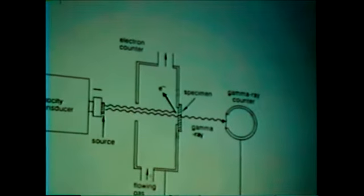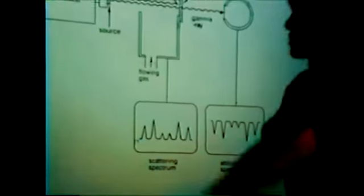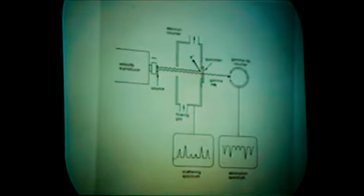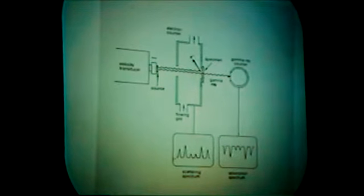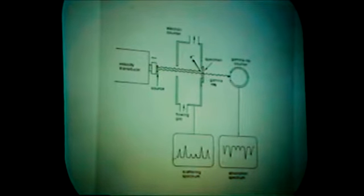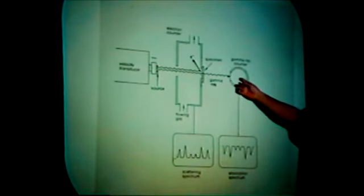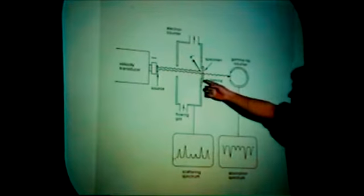These are the basic components of the Mössbauer experiment. You have the velocity transducer with the source clamped to it — it moves back and forth to modulate the energy. For iron, you need a maximum velocity of about 10 mm/s, which is enough to modulate energies in microelectron-volts, sufficient for nuclear energy levels. You have your absorber, and then either a gamma-ray counter behind the absorber, or a counter built around the specimen.